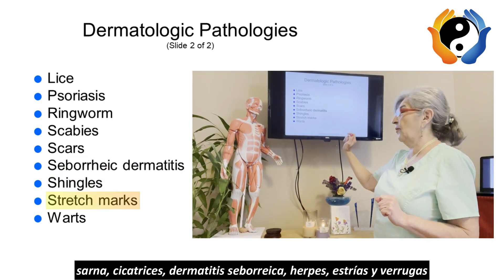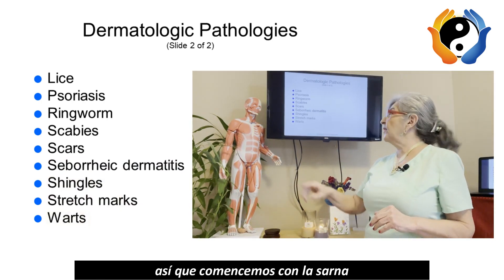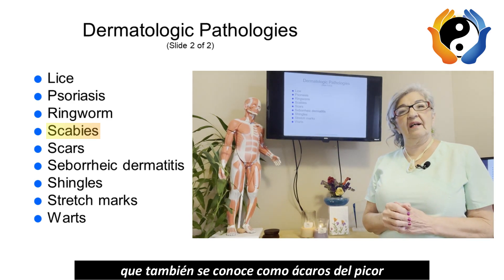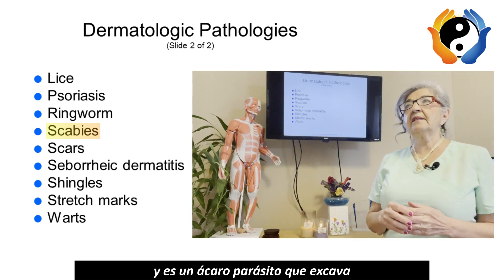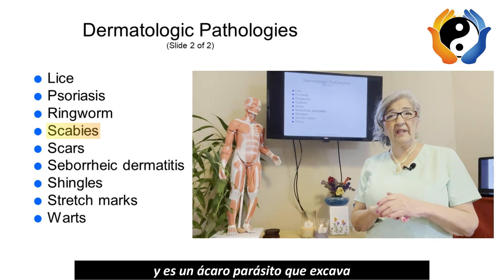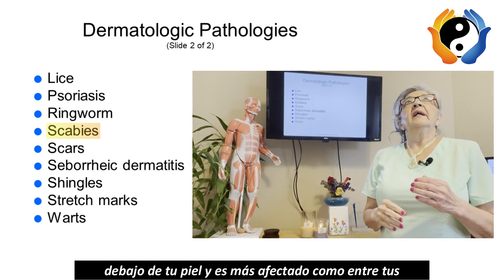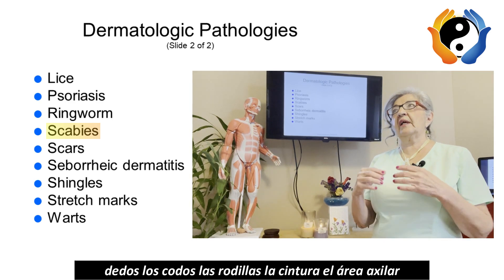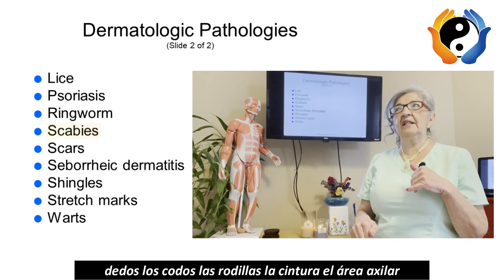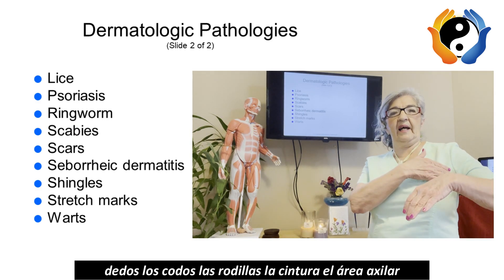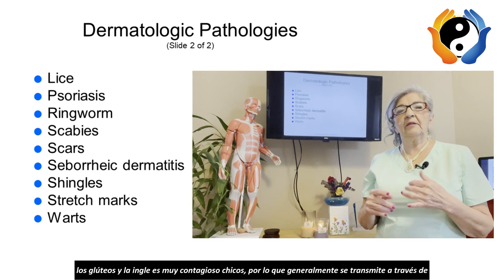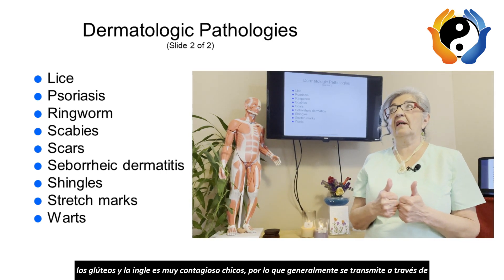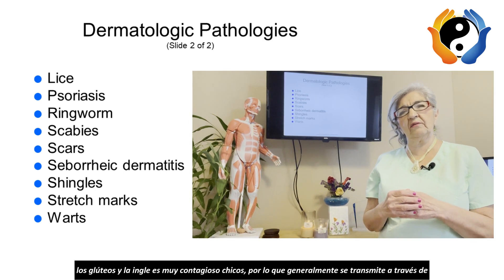Let's start with scabies, also known as itch mites. It's a parasitic mite that burrows underneath your skin. It most commonly affects between your fingers, the elbows, the knees, the waistline, the axillary area, the buttocks, and the groin. It is highly contagious.